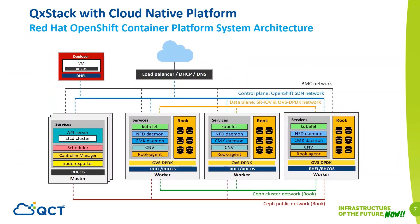The system architecture consists of three master nodes and three worker nodes with storage service. For networking, we logically divide the network into five types. The black line is the BMC network, an isolated network used for switch and server hardware management. The blue line is the OpenShift SDN network, used for the public API, web interface, and exposed applications. The yellow line is the data plane network, used for Intel EPA features such as DPDK and SRIOV. The red line and green line are the self-storage networks, leveraging a dedicated network architecture for OSD communication.